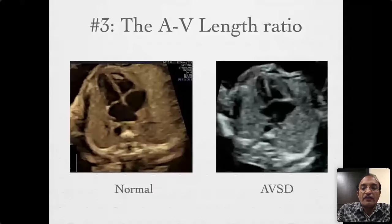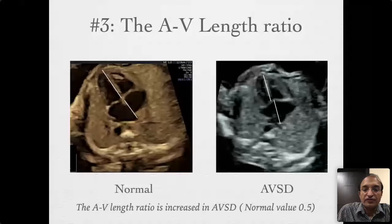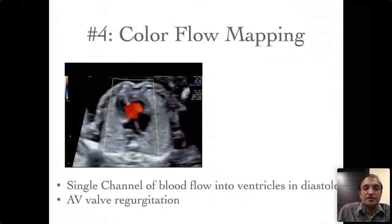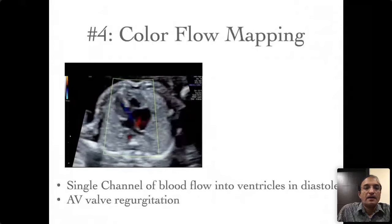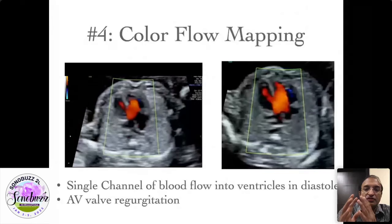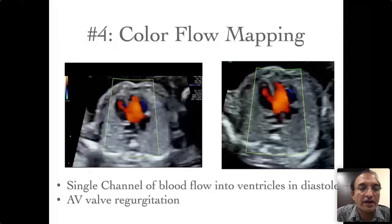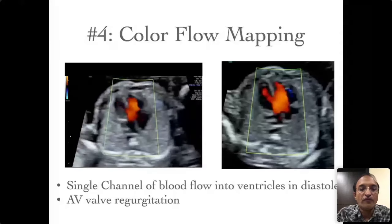The third feature involves the AV length ratio. Normally the ventricular length is greater than the atrial length, but in AV septal defect there is downward displacement of the valves, so the ventricular AV length ratio is increased. The fourth feature is that on color Doppler you find a single channel of blood flow into the ventricles instead of two separate channels, and you can also see atrioventricular valve regurgitation.